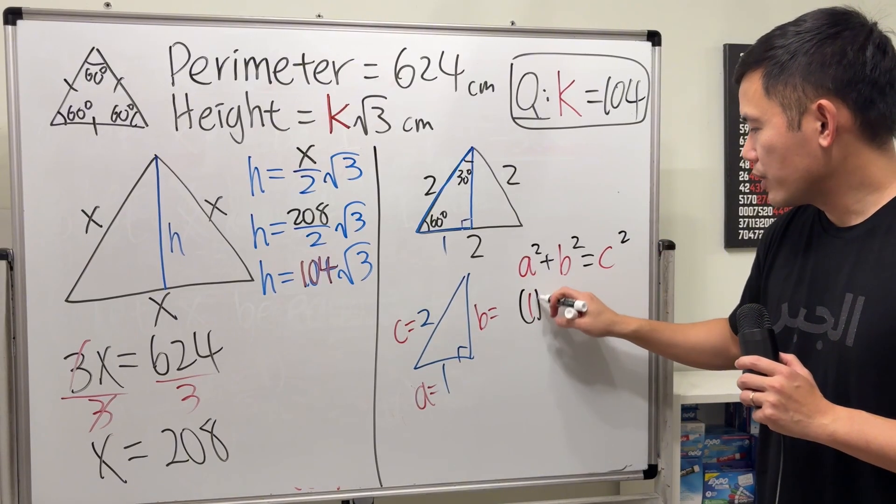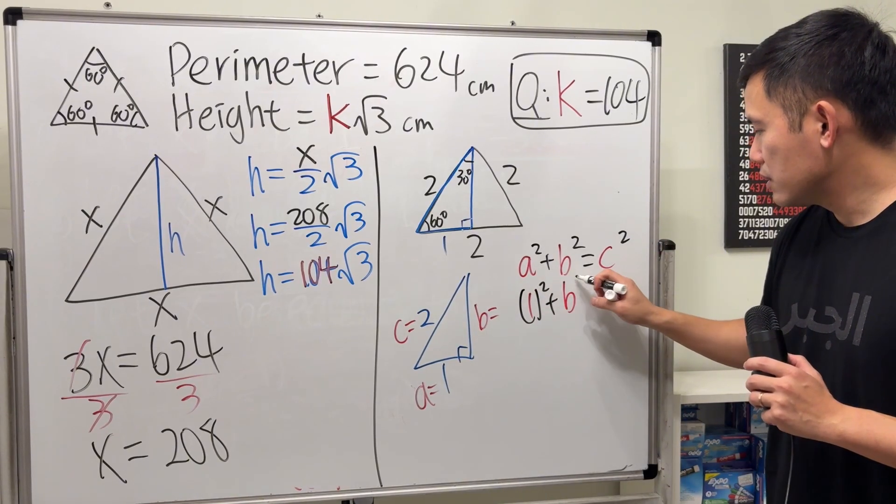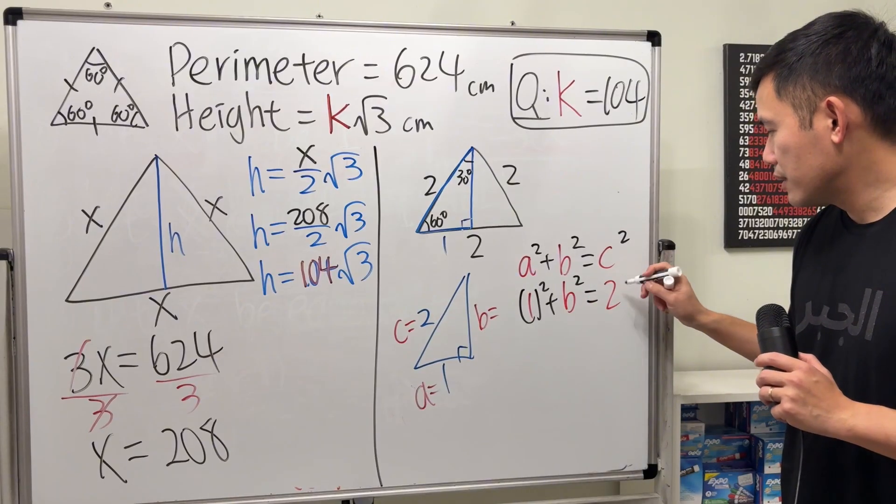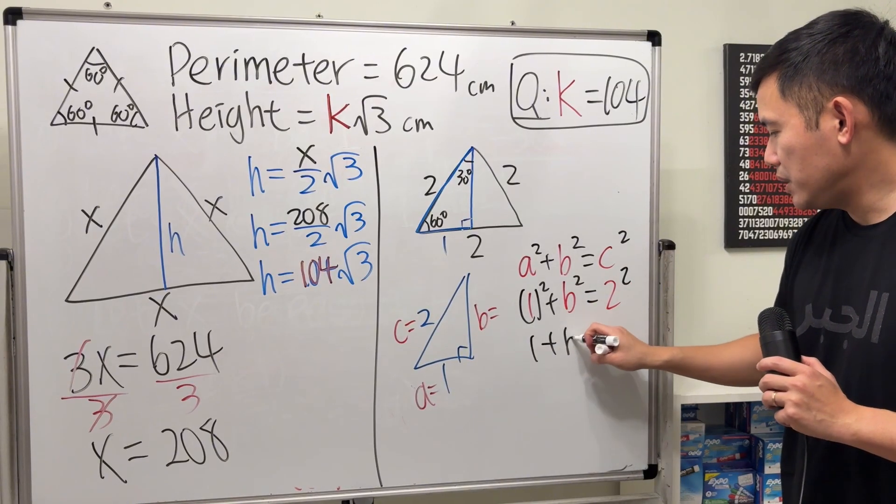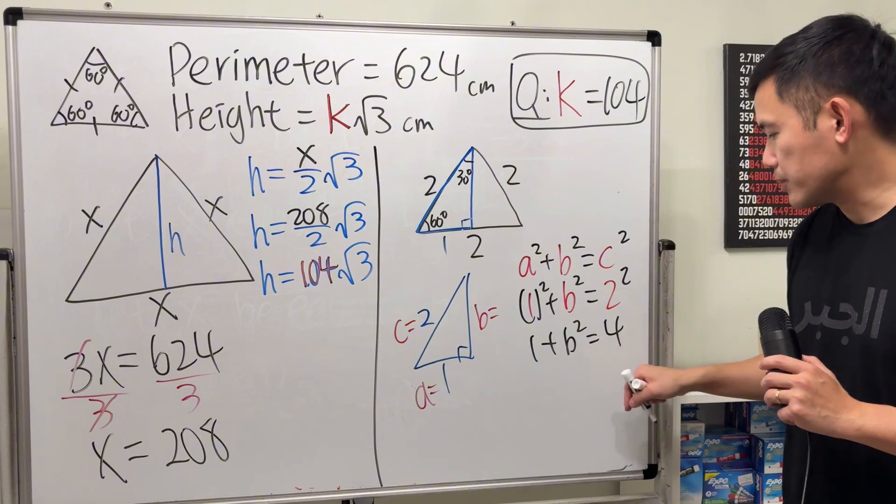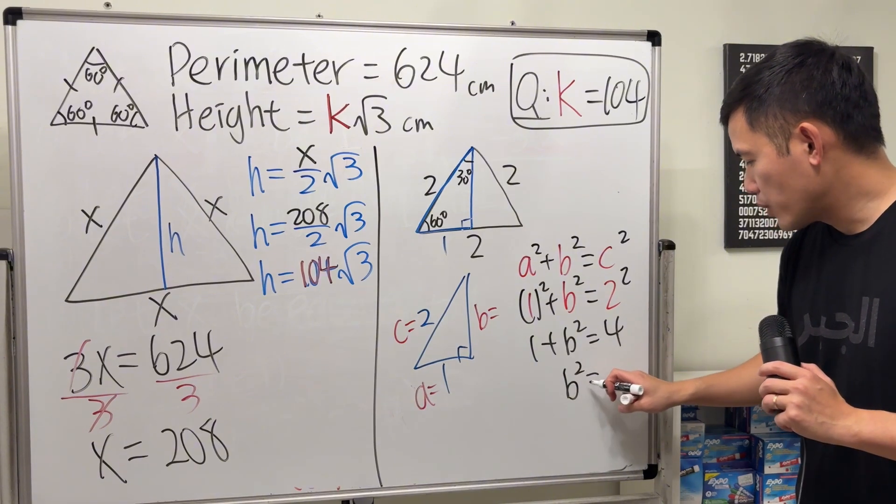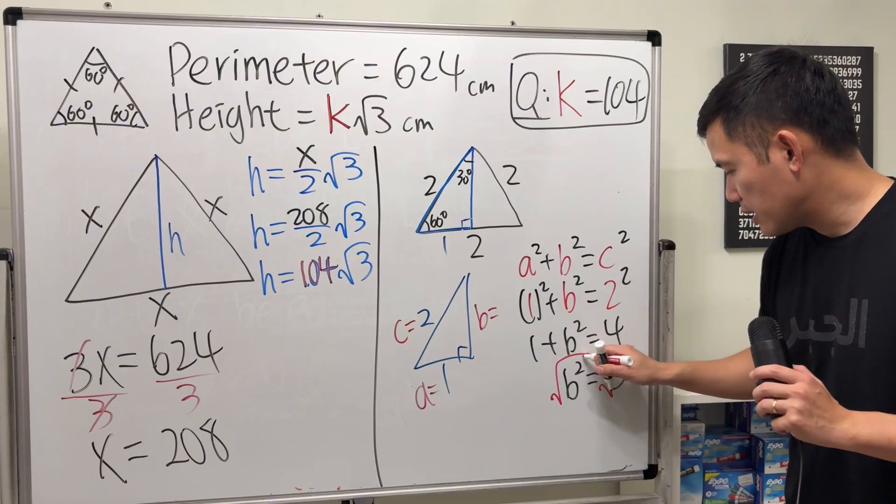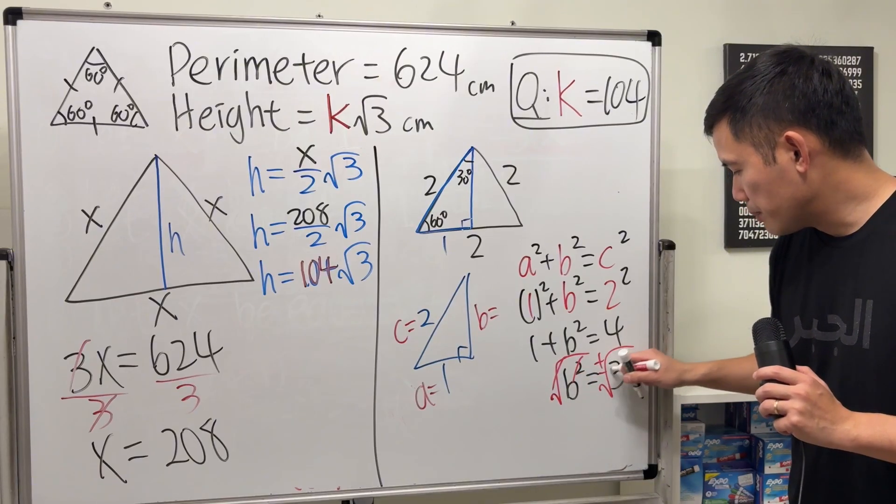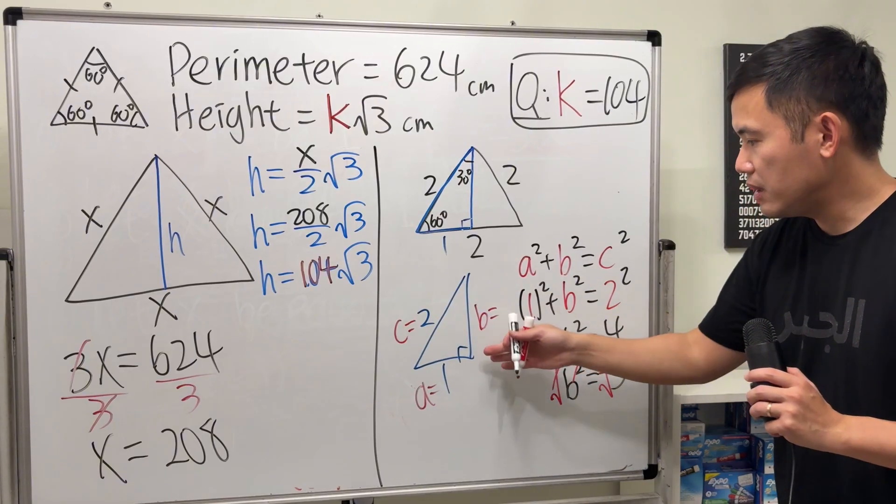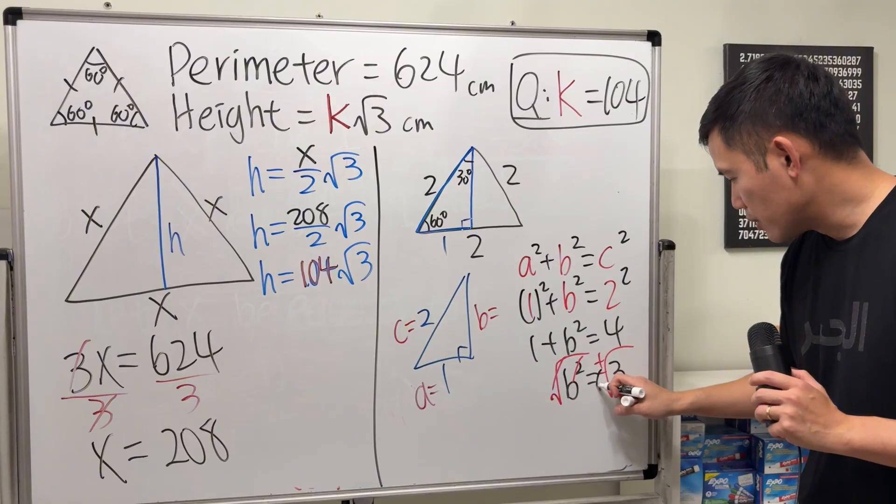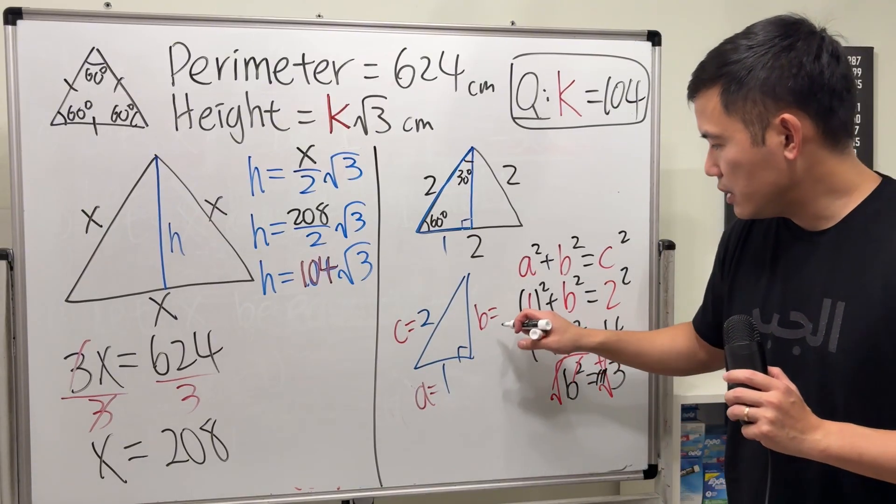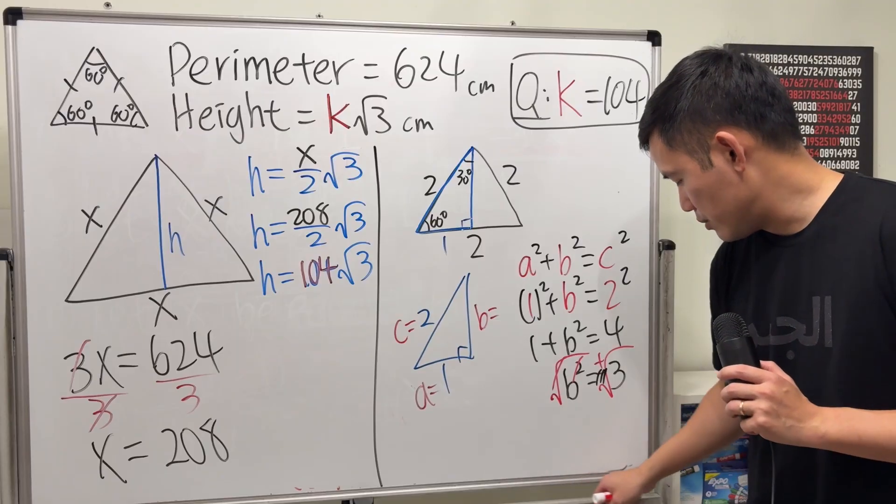a is 1. Square that plus b, we don't know. c is 2. That's 1 plus b squared is equal to 4. Subtract 1 from both sides. b squared is equal to 3. And then take the square roots of both sides. Cancel. Usually we put a plus minus here. But b is the side of a triangle. So it cannot be negative. So as you can see, b is equal to square root of 3.